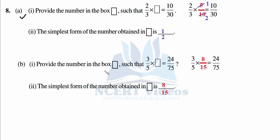For the second part (b): what should be multiplied by 3 to get 24? It is 8, because 3 times 8 is 24. For the denominator, 5 times 15 is 75. Now check if 8/15 is in simplest form — no cutting opportunity, so it is already in simplest form. That was the last question, question number 8.